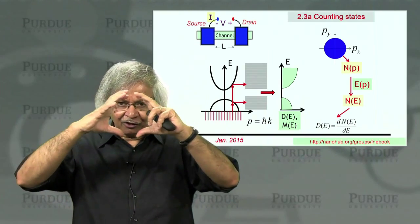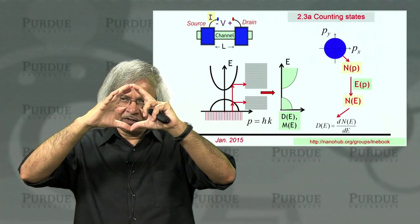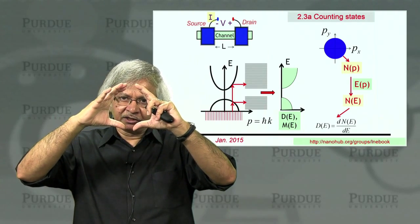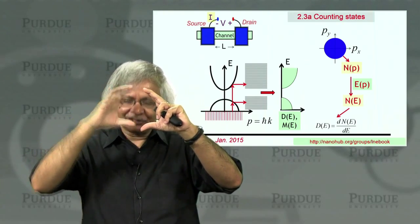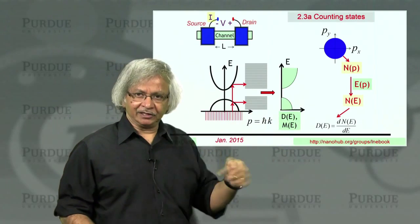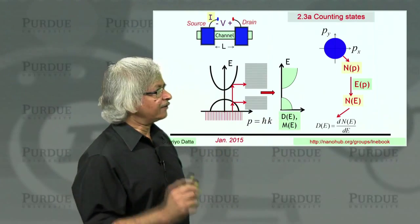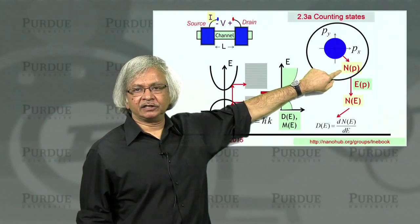In the sense, N tells you all the states up to a given energy E, and then we ask, if I increase this energy a little bit, how many extra states do I get? That kind of tells you the density of states at that energy. This is what we'll be doing later in the subsequent lectures. Right now, this lecture is entirely about finding that function N(p).